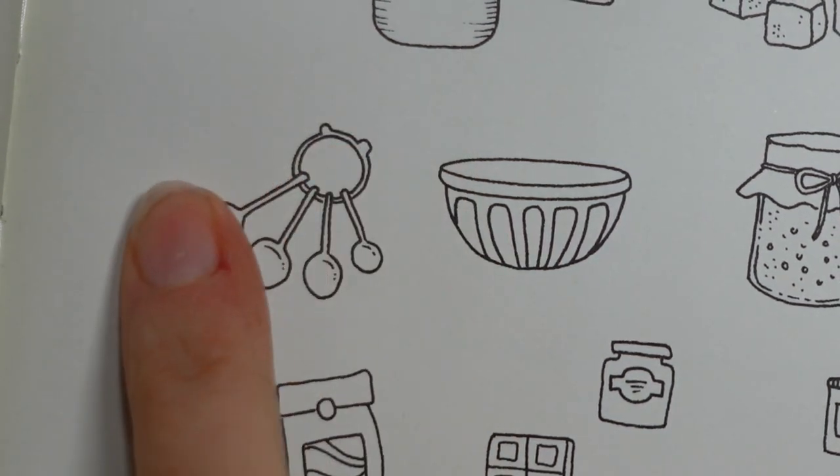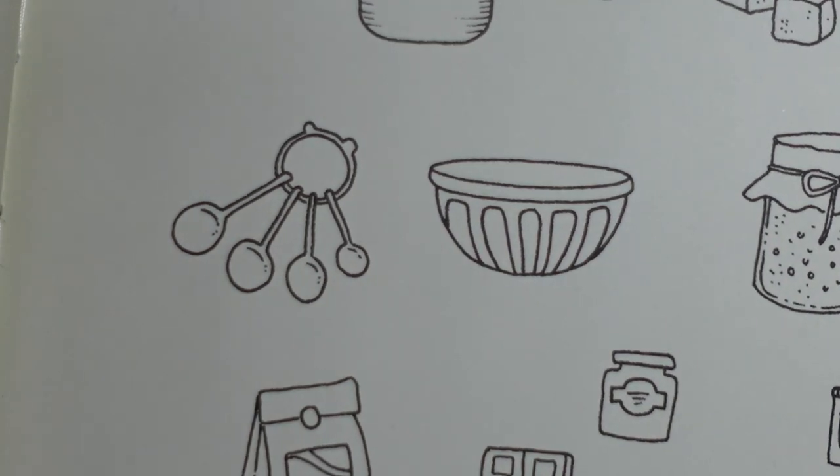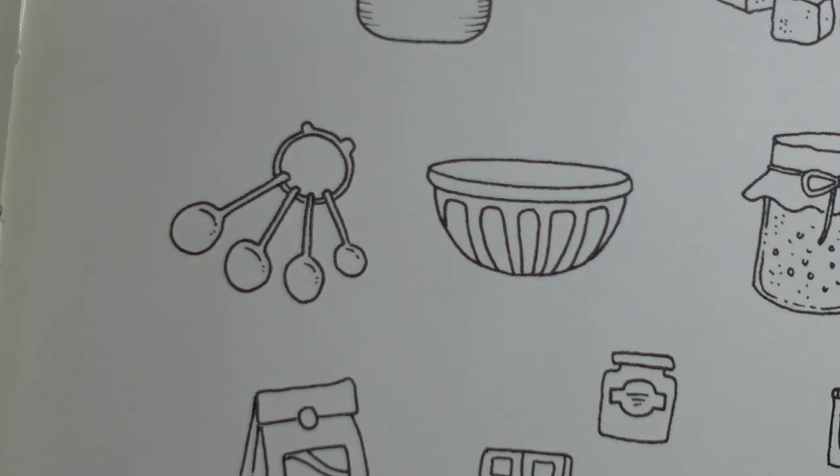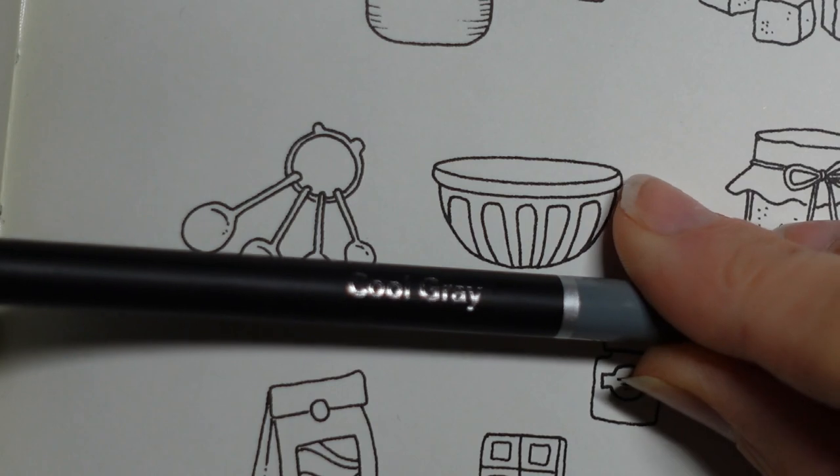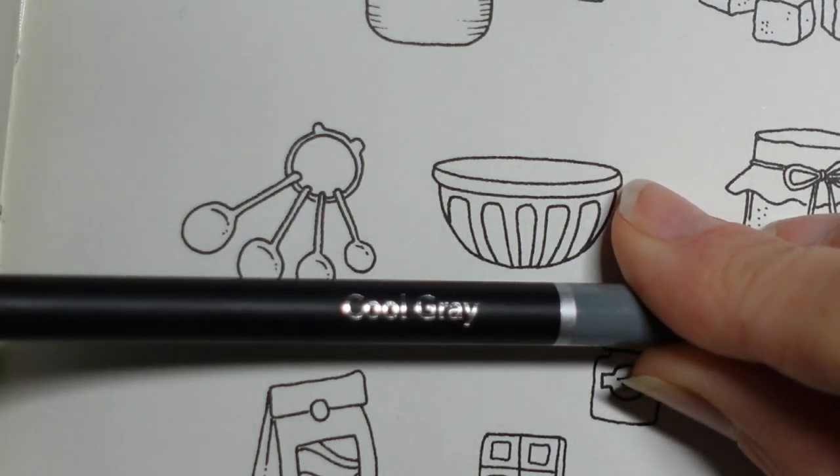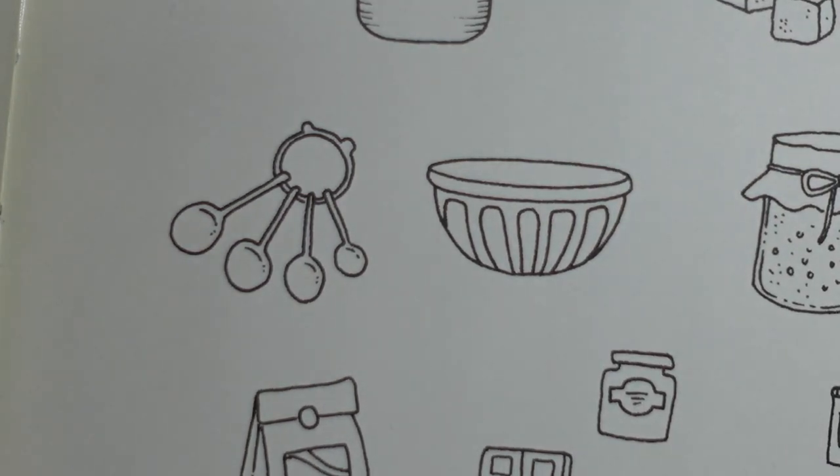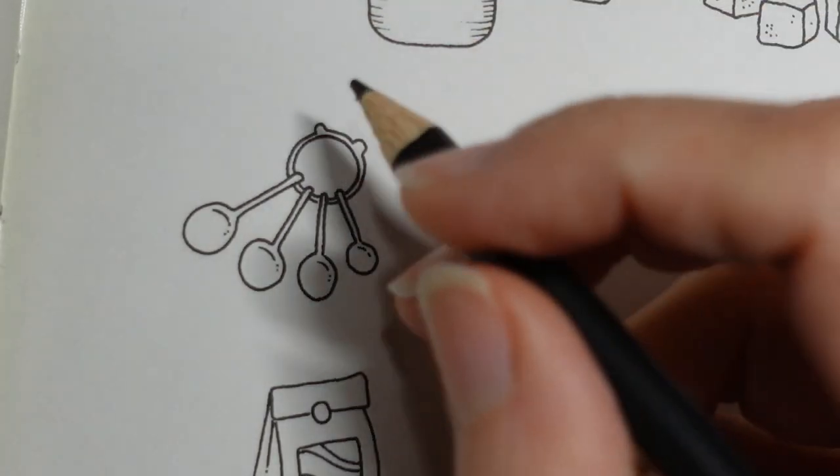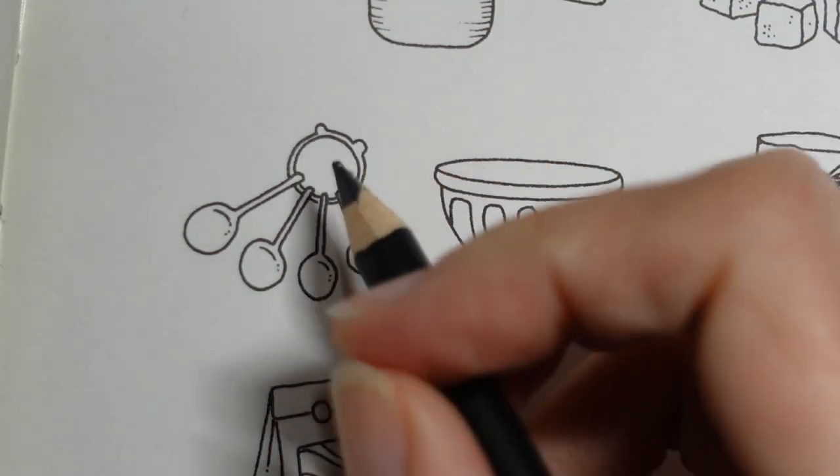So I thought I would start with these measuring spoons. Measuring spoons can either be plastic, so then you could do them a nice bright colour, or they could be made of metal and usually would be silver. I've decided I'm going to do them in silver. So I am grabbing a grey, I'm using my Castle Art 72 set today, so I'm going to use the Cool Grey, which is the lightest grey colour that I have in the set. I'm just going to show you how I would colour this to make it look silver.